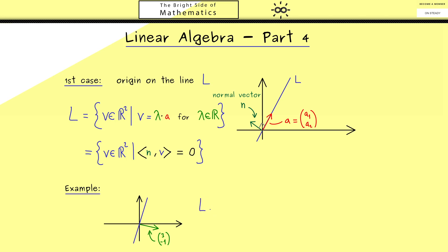Now for the set description we already know what to do. We write down L as V in R2 with the property that (3, -1) with V in the inner product is equal to 0.